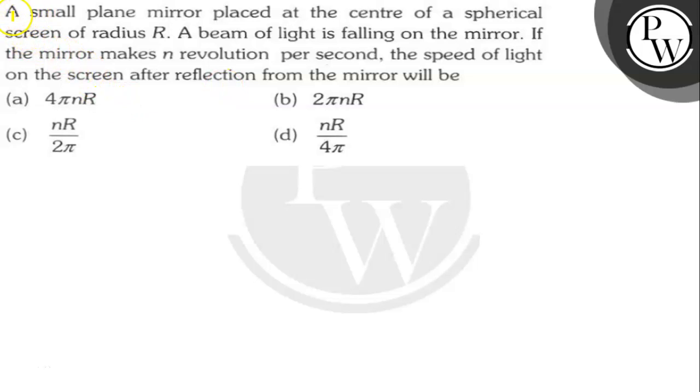Hello Bacho, let's read the question. The question says here, a small plane mirror placed at the center of a spherical screen of radius r. A beam of light is falling on the mirror. If the mirror makes n revolution per second, the speed of light on the screen after reflection from the mirror will be what?